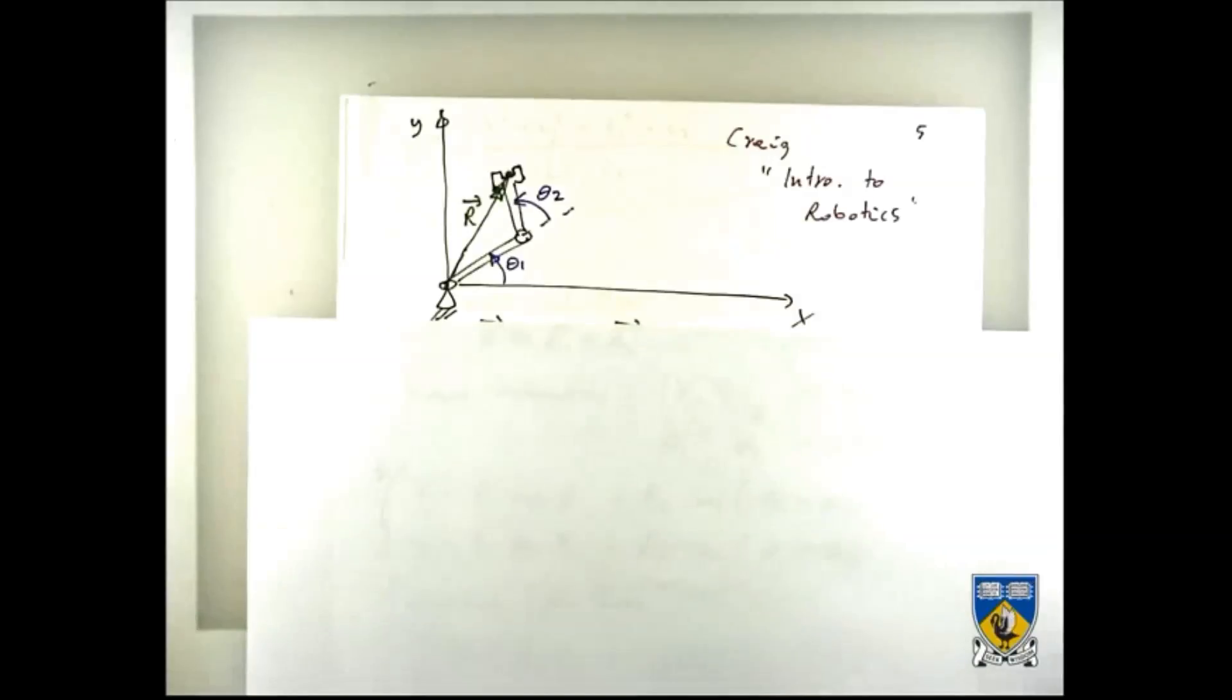So if you were in year 11 and were asked by the maths teacher to find the angles of theta 1 and theta 2 for these few triangles, you would be able to do it from first principles.